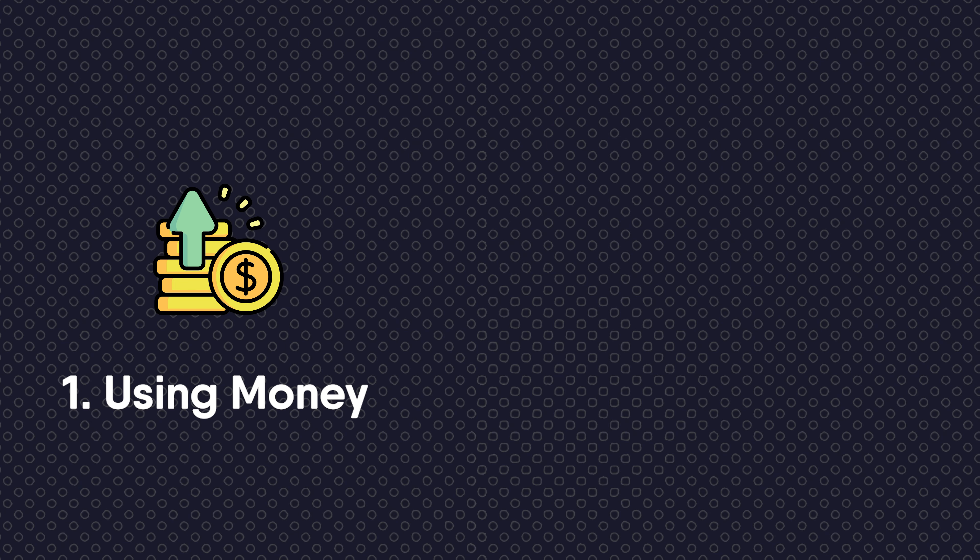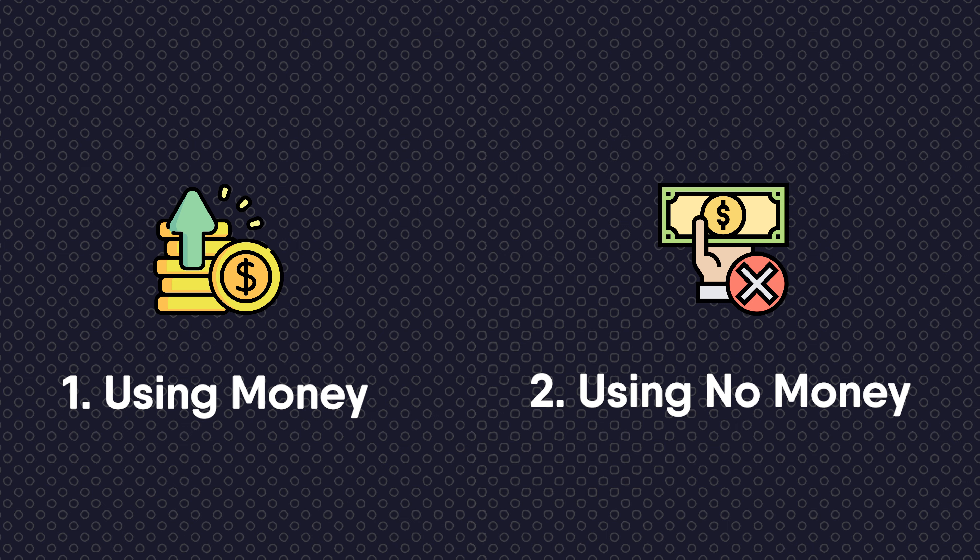Contrary to what many people think, affiliate marketing is a great way to make money nowadays, but it still is a numbers game and you still need to have a certain audience to market to. Today I'm going to show you how you can do that as fast as possible. There are two ways you can build an audience: the first way is using money, and the second way is using no money.